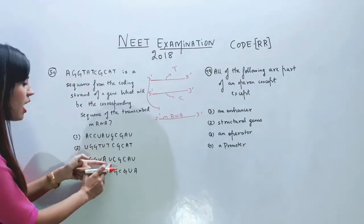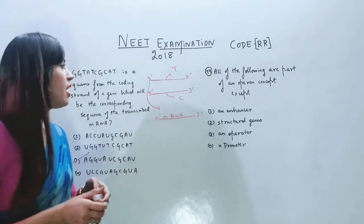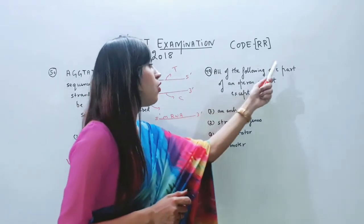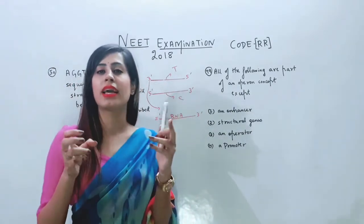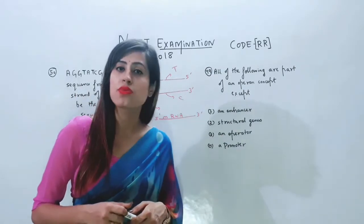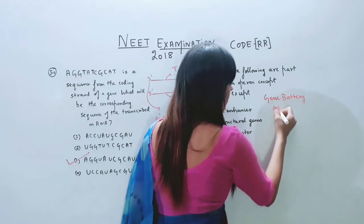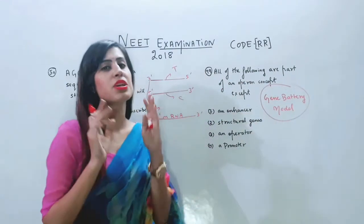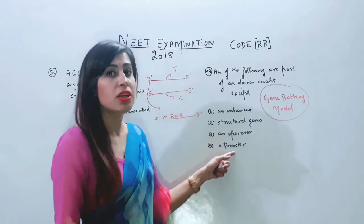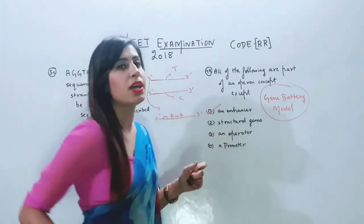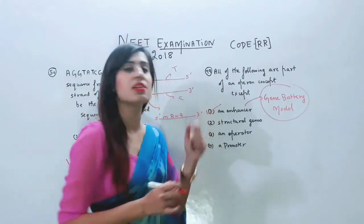The next question is question number 49: all of the following are part of an operon concept. An operon is a piece of DNA which works like a single regulated unit and is found in prokaryotes. In eukaryotes, the gene battery model is present instead. The correct option here refers to a part of the gene battery model, which is found in eukaryotes. So the correct answer is option number one.